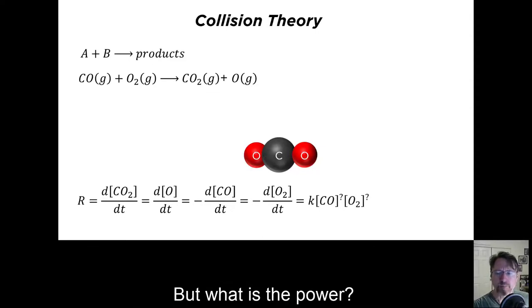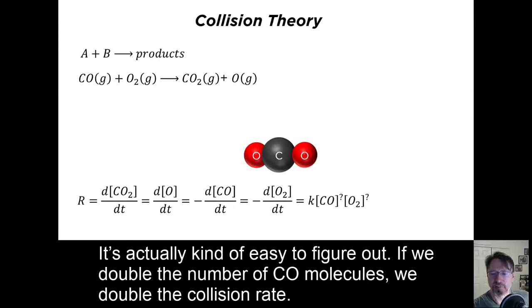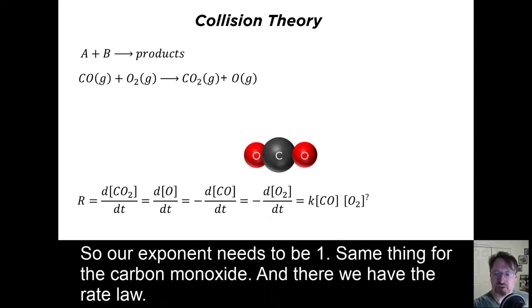But what is the power? It's actually kind of easy to figure out. If we double the number of CO molecules, we double the collision rate. So our exponent needs to be one. Same thing for the carbon monoxide. And there we have the rate law.